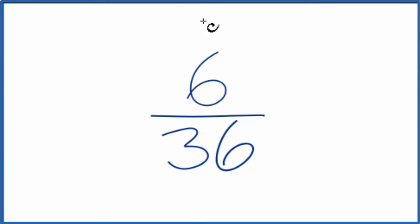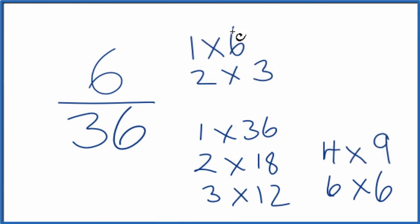Let's write the factors for 6 and 36. The largest common factor, the greatest common factor, is 6.